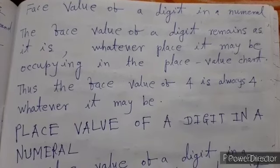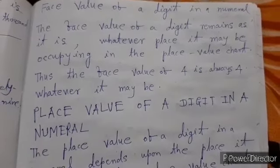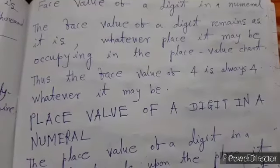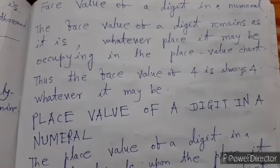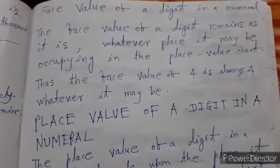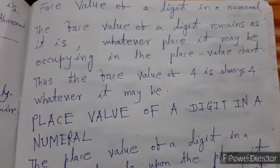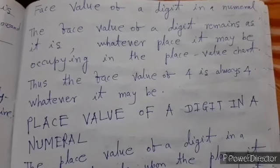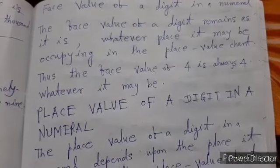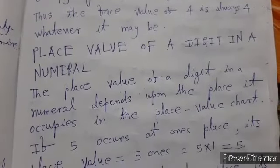For example, if we write the place value of 4, if 4 is given at any place, the face value of a digit number is the same as that digit whatever place it may be occupying in the place value chart. Thus the face value of 6 is always 6 whatever it may be.